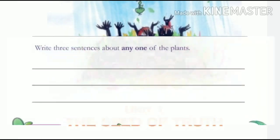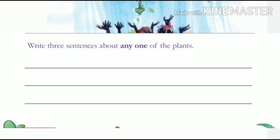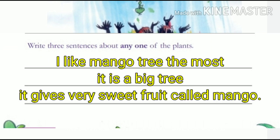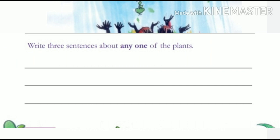You just do it and send me. After completing all the columns, you have to write three sentences about one plant — whichever plant you like. Suppose mango is my favorite — I will start with: 'Mango tree is my favorite plant. It is a big tree and it will become a big fruit. Its fruits are so tasty and are called mango.' Like that, you have to write. Don't copy the same — write about whatever plant you like most.